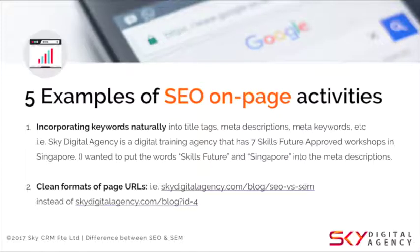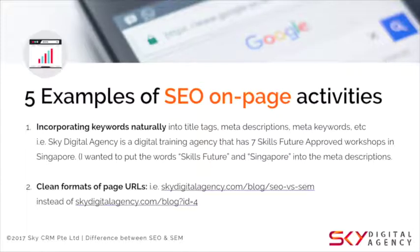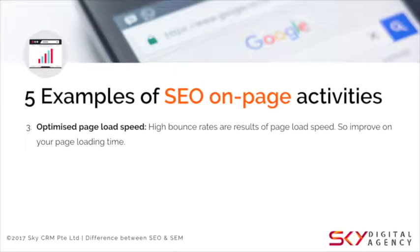Point two: use clean format page URLs. When your CMS generates pages, make sure the URLs are descriptive of the page content. A bad example: skydigitalagency.com/blog?id=4 — this tells you nothing about the content. A good example: skydigitalagency.com/blog/seo-versus-sem — it tells you it's a blog and what the article is about. Make sure all your page URLs are clean and descriptive.